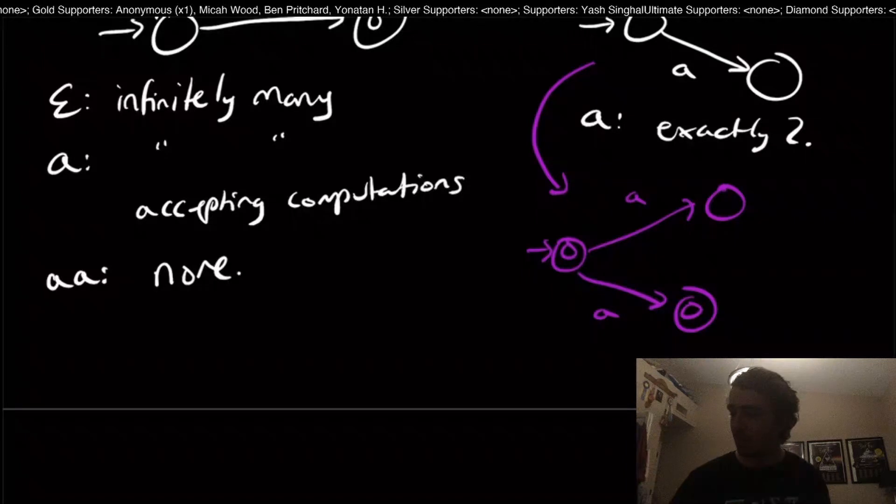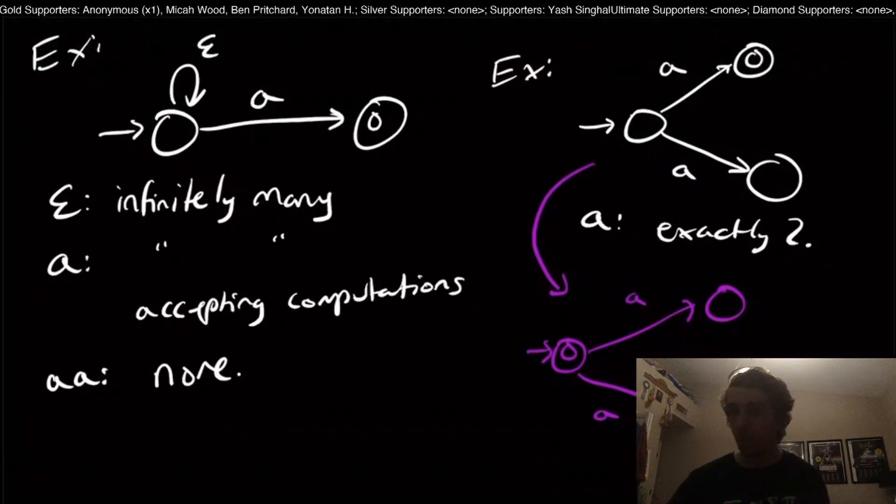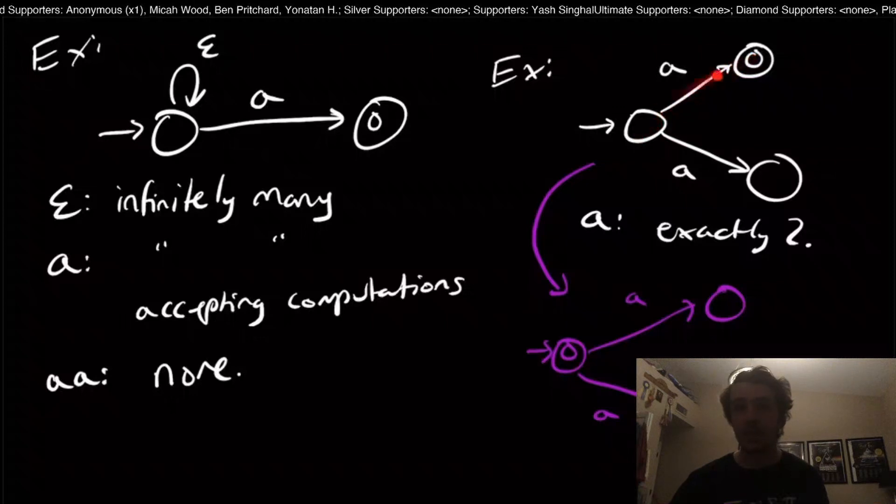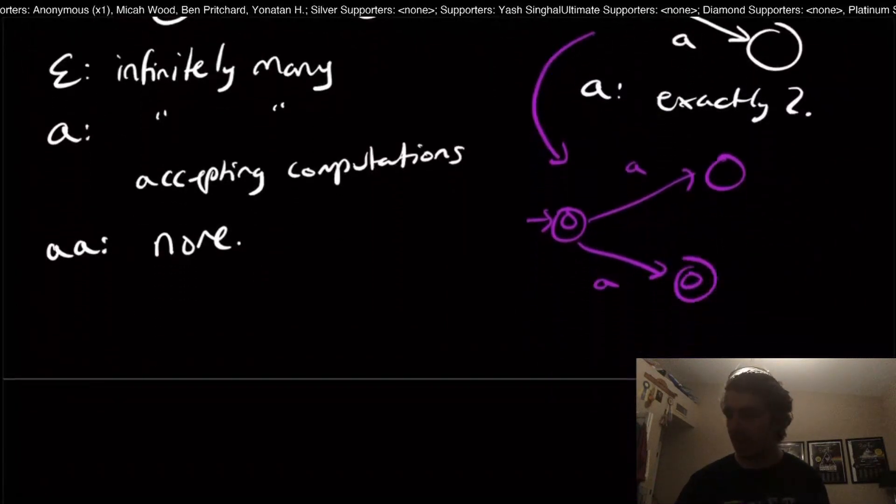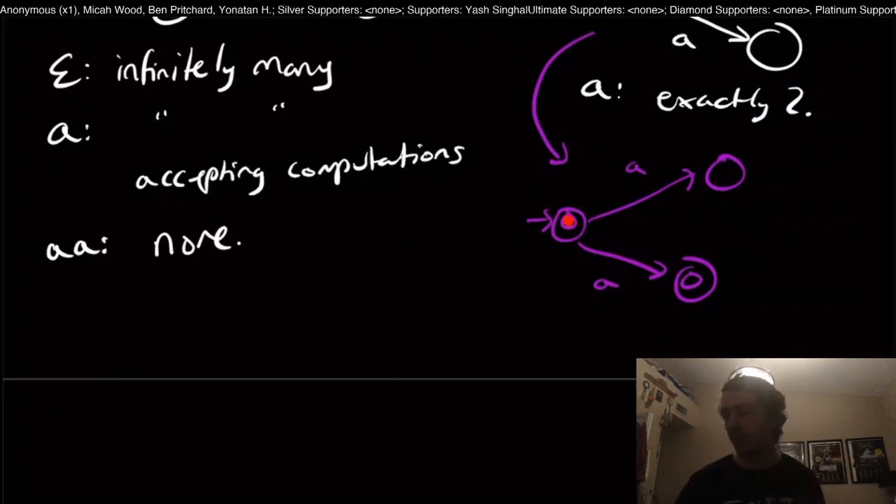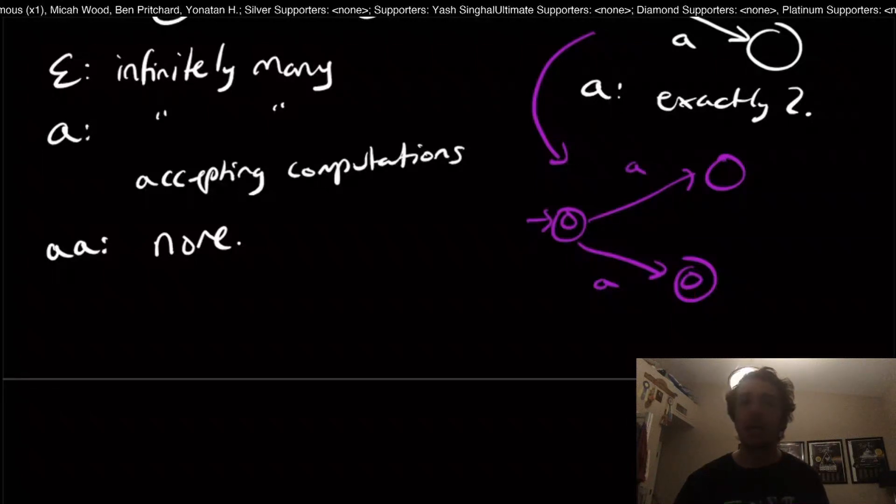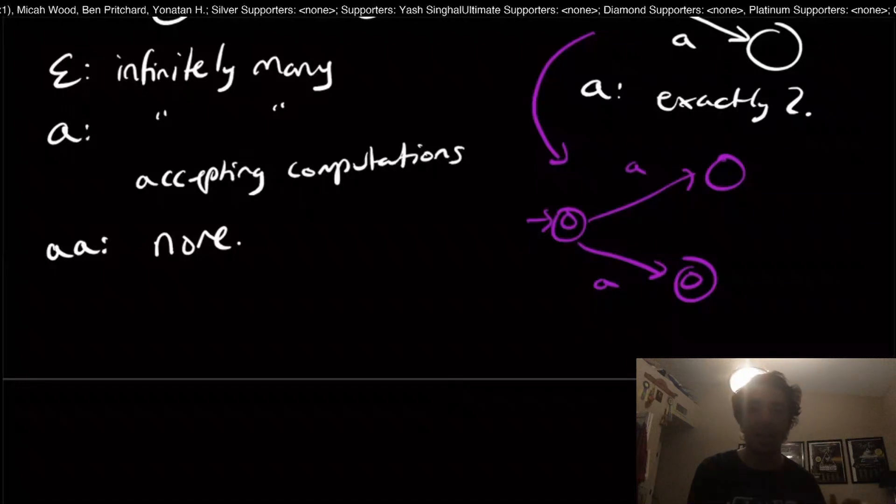I have exactly the same structure, but now I'm going to flip which states are final and which ones are not. We get something interesting. Before, we accepted the string A via this choice. And in this one, the complement, so to speak, NFA, we also accept the string A. But the string A can't live in a language and the complement at the same time.